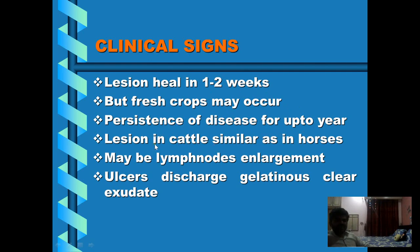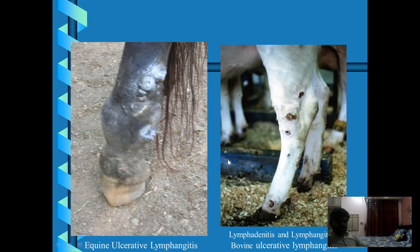Lesions in cattle are similar to those in horses, but may also involve lymph node enlargement, and lesions may also be present above the hock joint. Ulcers in cattle discharge a gelatinous clear exudate. In the images shown, you can see inflammation and swelling around the fetlock, formation of a nodule, and creamy greenish pus discharging from the lesion. In cattle, lesions are present above the hock.